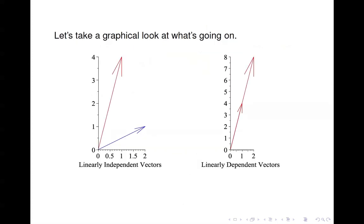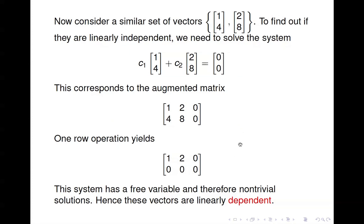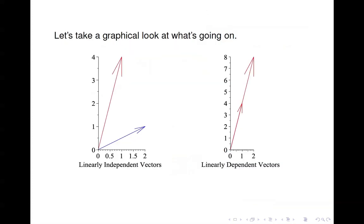If you look at the first set of vectors graphed, we had (2,1) and (1,4) — they're linearly independent. Whereas the second set had (1,4) and (2,8), which are multiples of each other, so they're linearly dependent. If you think about the span of the first two vectors, you can take a linear combination and produce any vector in R2. However, for the dependent pair, any linear combination only gets you vectors on the line defined by those vectors — you get no vectors off that line.